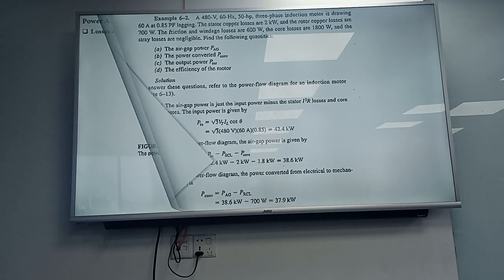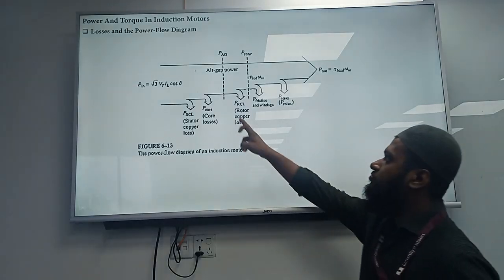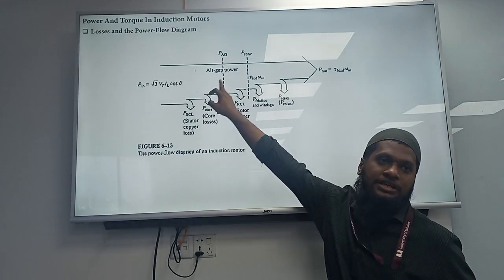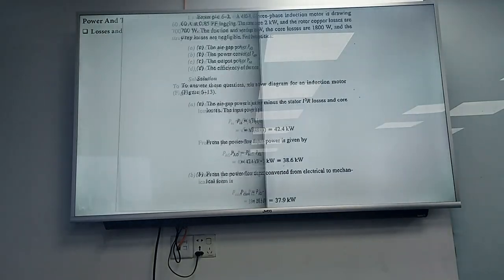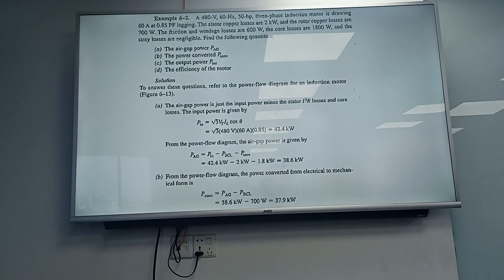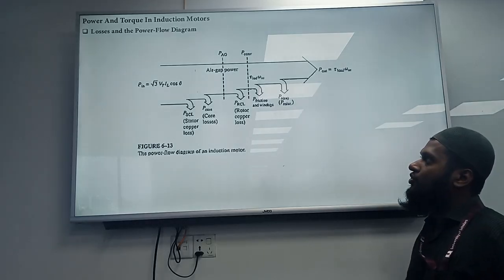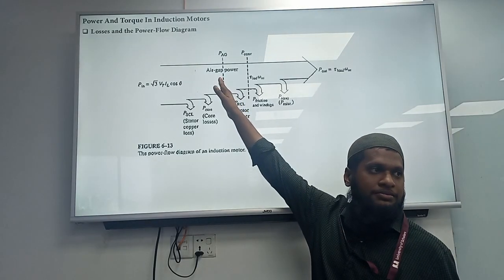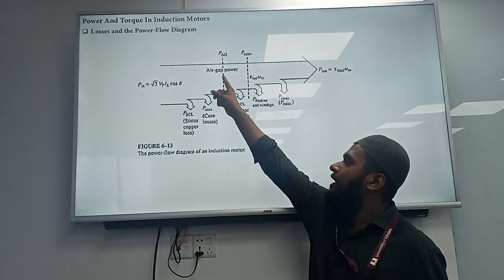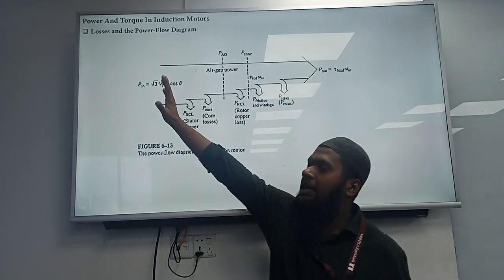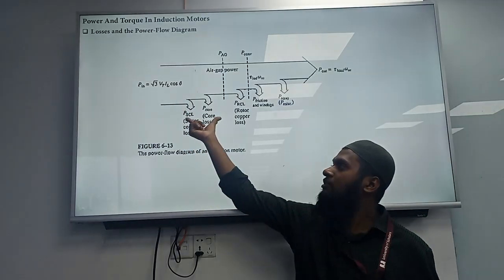The air gap power is the input power minus the stator losses. The power used by the stator includes the I²R losses and core losses.